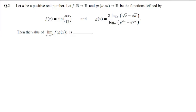In this question we are given two functions f(x) and g(x) and we need to find the value of the limit as x tends to alpha positive of f(g(x)). Clearly f(x) is a continuous function, so when f is continuous we can take the limit inside.